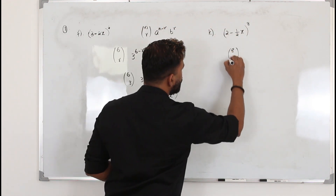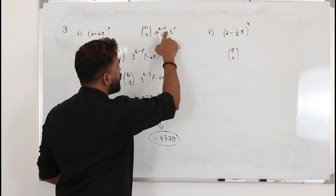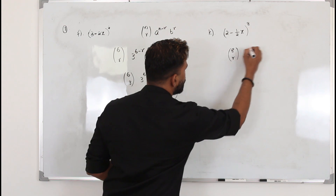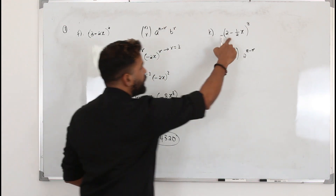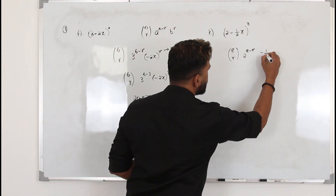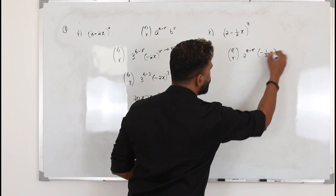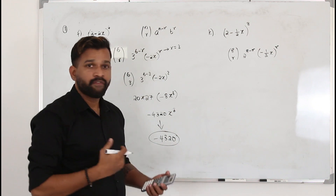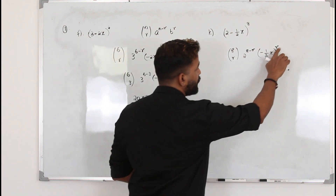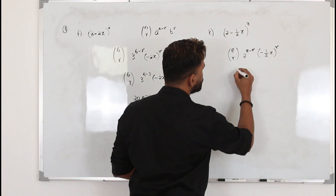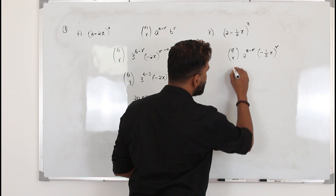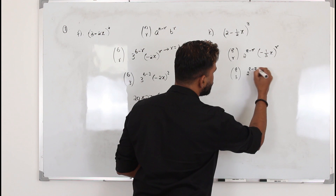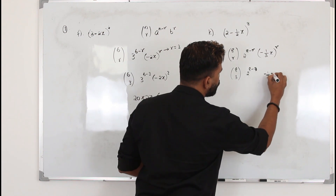The general term becomes 8Cr. A is the first term, 2^(8−r); B is the second term, (−½x)^r. In order to find the coefficient of x³, replace r by 3: 8C3 · 2^(8−3) · (−½x)^3.